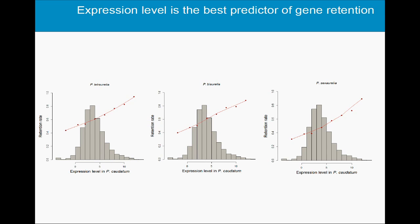For example, genes in caudatum with low expression level have their orthologues in tetraurelia retained after the most recent gene duplication only about 40% of the time. But genes from the high-expression bin have been retained more than 80% of the time. So clearly, expression level is a strong factor that determines the probability that a pair of genes will be retained following whole genome duplication.